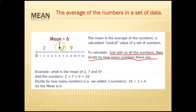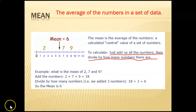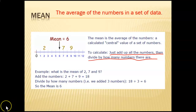So in this example the numbers were 2, 7, and 9. They added them up and got 18. 18 divided by 3 is 6, so the mean is 6. To find the mean or the average, you just add up all your numbers in your data and then divide by however many numbers you have.